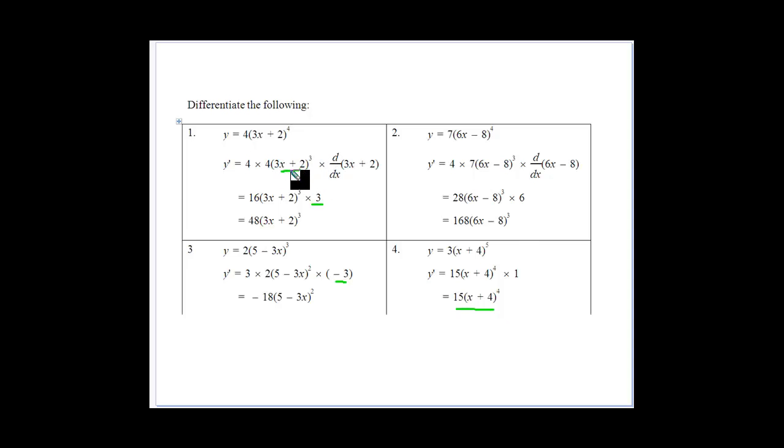We treat our bracket like it was just a variable. Bring our power down, subtract 1 from the power, bracket stays the same. But then we multiply by the derivative of the bracket. And that's what we call the function of function, or the chain rule.